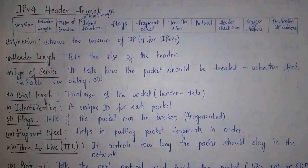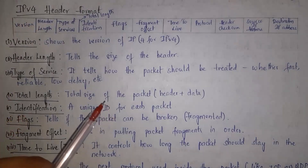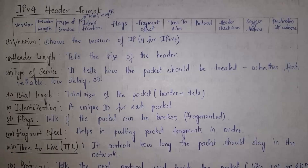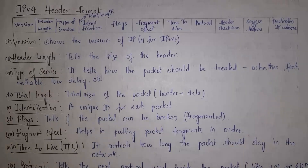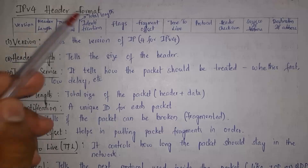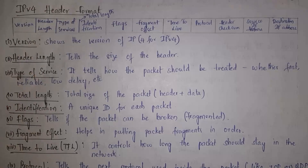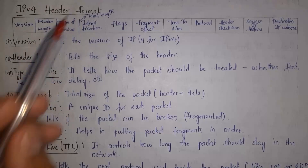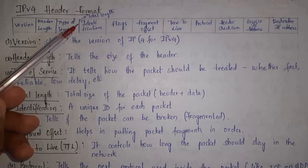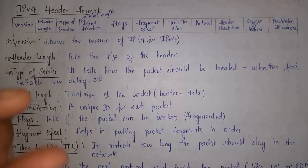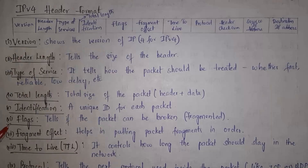The third field is type of service, which tells how the packet should be treated — whether packets need to be sent fast if there is important data, or sent slow for less important packets. The fourth field is total length, which gives the size of the packet. Next is identification, which contains a unique ID for each packet. Next is flags, which tells whether packets can be broken or not.